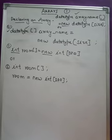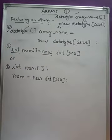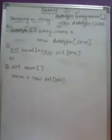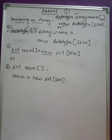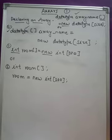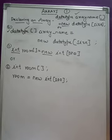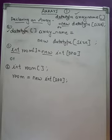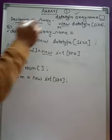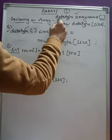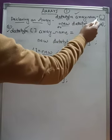In the first syntax, the declaration begins with the data type of the array. Data types include int, double, float, char, long, and so on. When you need to declare an array of a particular data type, you first write down the data type, then the name of the array.